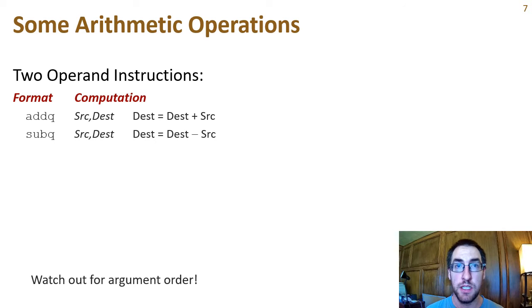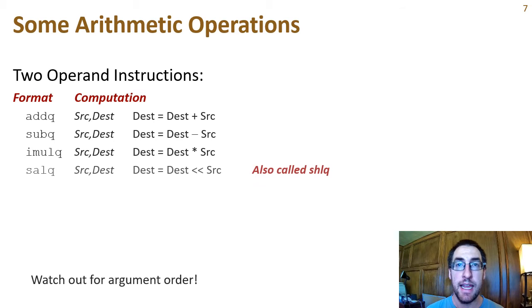Next, we have SUBQ, which is basically like ADDQ, but it does subtraction instead. Note that it subtracts the source from the destination. Since subtraction is non-commutative, the order matters. The IMULQ does a multiplication with truncation of any overflow. SALQ is shift arithmetic left, which we mentioned already. It bit shifts the destination left by the number of spaces specified by the source, filling with zeros from the right.